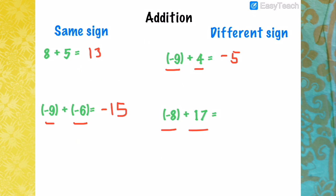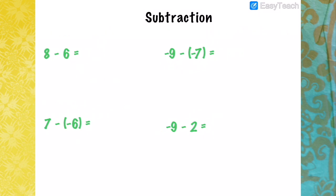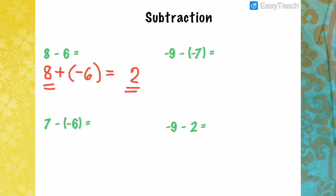Another example: negative 8 plus 17. Since the signs are different, we subtract 8 from 17, giving 9, and since 17 is the bigger value, the answer is positive 9. Now in subtraction, what we need to do is proceed to addition — change the operation to addition and change the subtrahend to its opposite sign. So 8 minus 6 becomes 8 plus negative 6, which equals 2. Since 8 is the bigger value, the answer is positive 2. All the rules of addition apply.